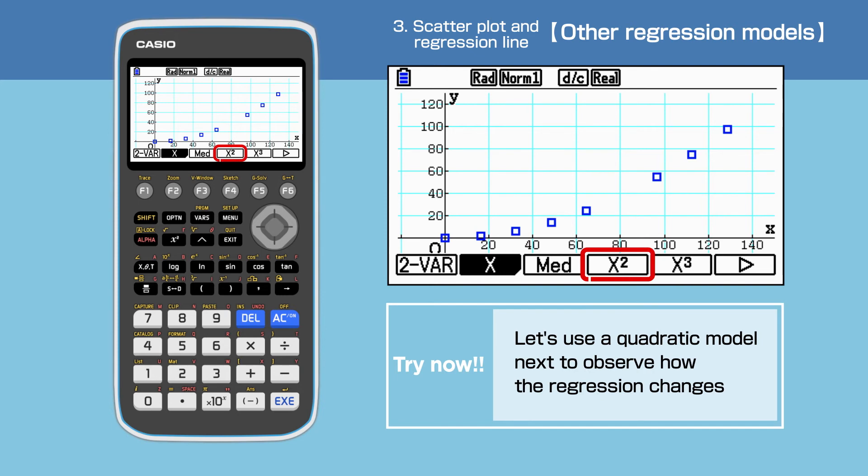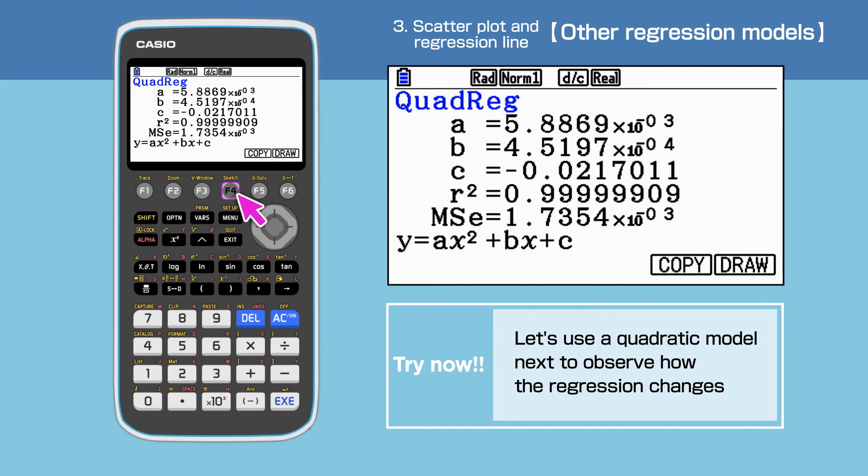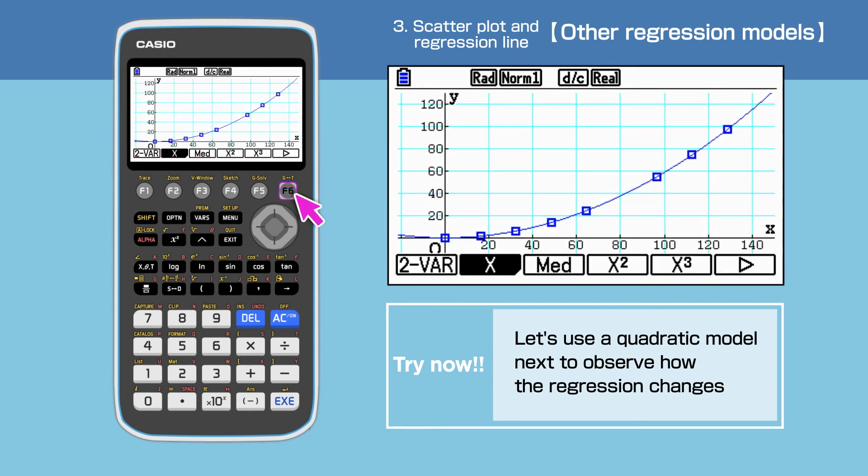Select a quadratic regression by pressing F4. The correlation determination for the quadratic model is 0.999, which is better than the linear model. Press F6 to draw this graph. The graph is drawn.